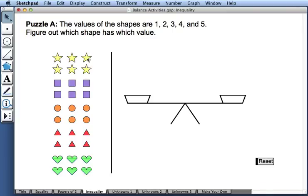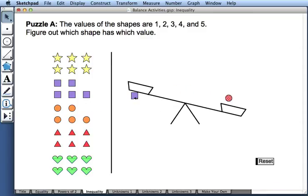To do so, we can pick shapes and drag them onto the balance. For example, I might drag a square and a circle onto the balance, and I discover that my circle is heavier than my square.